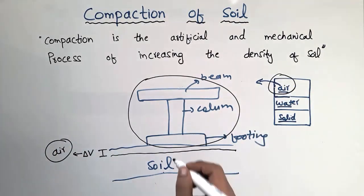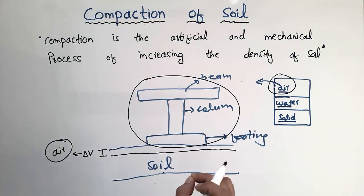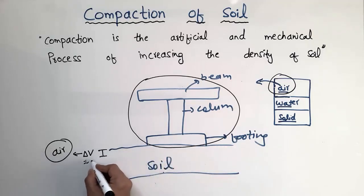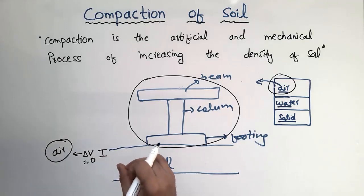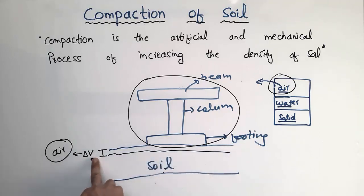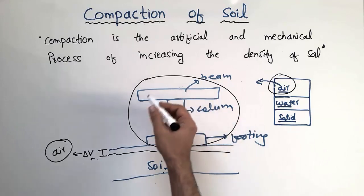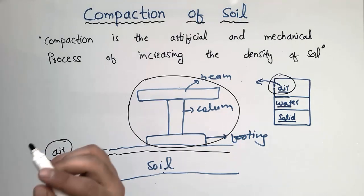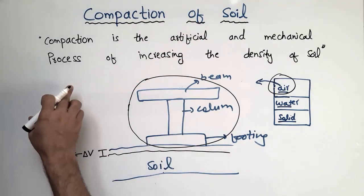The air content is responsible for the deformation of the soil mass. If you compact the soil, there will be no decrease in volume — delta V will be approximately equal to zero — and there will be no air void content in the soil mass, so there will be no deformation from the load. That's why it is very important to have compacted soil before constructing any structure on top of it.